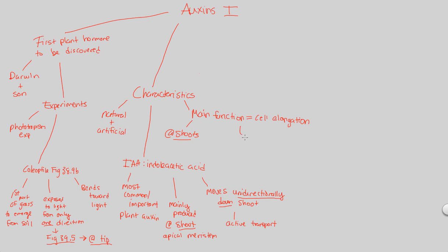What allows for cell elongation? It's the cell wall — the cell wall is the structure that elongates and allows the cell to grow. If cells elongate, the shoot elongates, meaning the plant as a whole grows. Specifically, there is a primary cell wall (primary CW) and a secondary cell wall. The primary cell wall mainly consists of cellulose fibers, which are somewhat maneuverable and changeable.